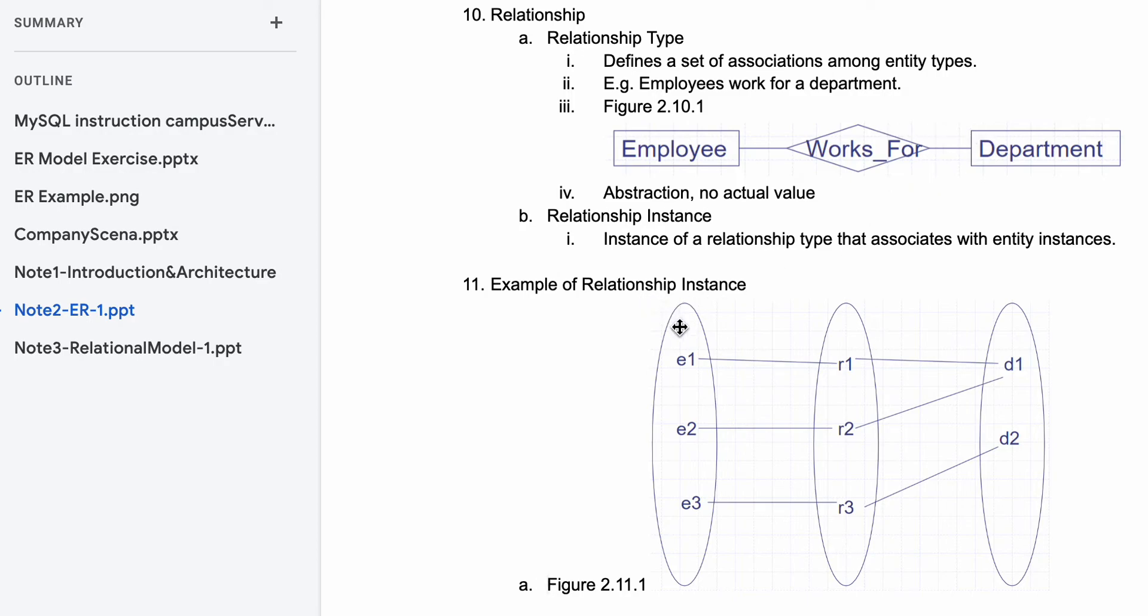Now you have an example here. Let's say we have multiple entities - they're all separate. We have different employees, no person's the same. They all have different relationships, but they can work under the same department or under different departments. So that's an example of relationship instance.